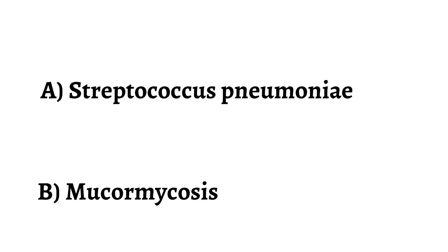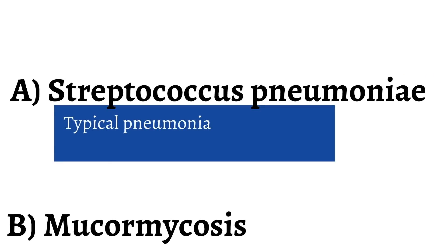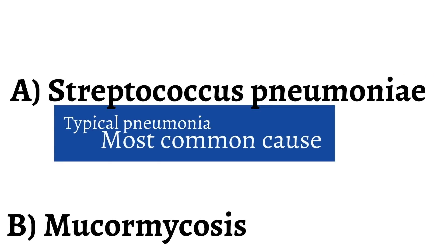Let's begin with choice A, Streptococcus pneumoniae. Strep pneumoniae is one of the most common causes of community-acquired pneumonia. But the stem of the question does not seem to describe a typical pneumonia. Usually Streptococcus pneumoniae does not cause a gastrointestinal illness and it is rare to develop hyponatremia. If the stem had presented typical pneumonia symptoms, then Strep would have been right. But here we see a patient with some atypical features.